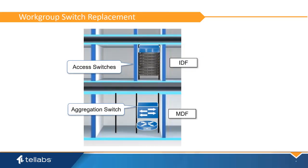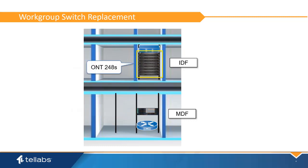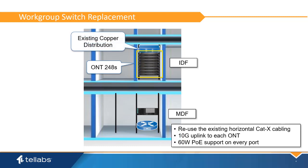Closet-based switch replacement is an efficient brownfield deployment of PON. Closet-based access switches can be replaced by new 48-port ONTs. ONTs are powered, mounted, and cabled in the same way as the workgroup switches. PoE and uniport capabilities are the same as the workgroup switch. Copper is reused, and in many cases, fiber is reused.